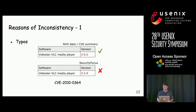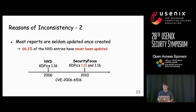We tried to figure out some reasons causing inconsistency. One cause is typos. For example, SecurityFocus misspells a version as 0.6.8, while the correct version is 0.8.6. Human mistakes are one reason. Another reason is that most reports are seldom updated once created. We found that around 66% of NVD reports have never been updated. In other words, even if you find another vulnerable version and report it to NVD, they very likely won't take action. For example, in 2010, new vulnerable versions were added to SecurityFocus, but NVD still listed 1.16 as the only vulnerable version.